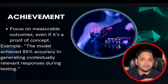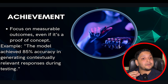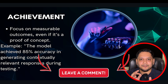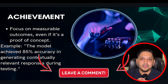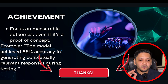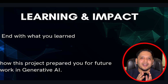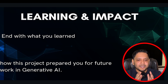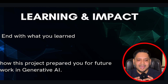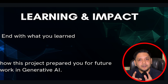Next, focus on the results and measurable outcomes you achieved in your project, even if it is a proof of concept. For example: the model achieved 85% accuracy in generating contextually relevant responses. Last but not least, explain the learnings from your project and its impact — mention what you learned and how this project prepares you for future work in generative AI.